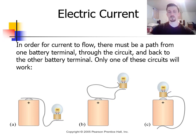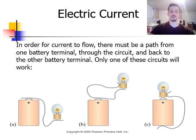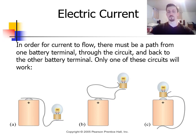In order for current to flow, only one of these three circuits will actually work and have current flowing. It would be circuit C that has an uninterrupted path from positive through the circuit to negative. Circuit A is connected to the positive, but then the other end isn't connected anywhere, so there would be no current flow. Circuit B has an uninterrupted path, but it goes from positive to positive — so once again, you wouldn't have any current flowing through that circuit.